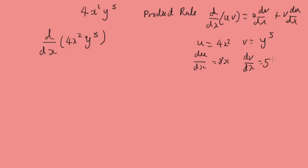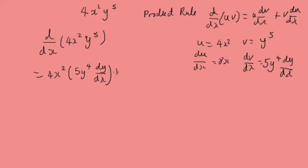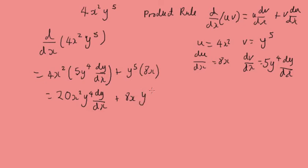So dv by dx would be 5y to the power of 4 times dy by dx. Slotting this back in, we have u which is 4x squared, multiplied by dv by dx which is 5y to the power of 4 dy by dx, plus v which is y to the power of 5, times du by dx which is 8x. Tidying this up: 5 times 4 gives 20x squared y to the power of 4 dy by dx, plus 8x y to the power of 5.